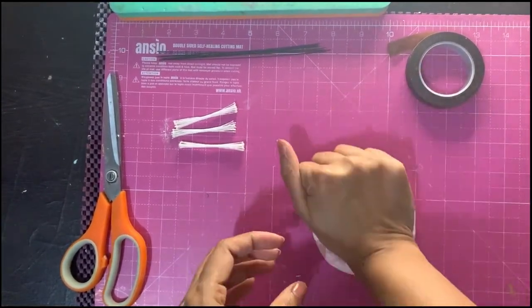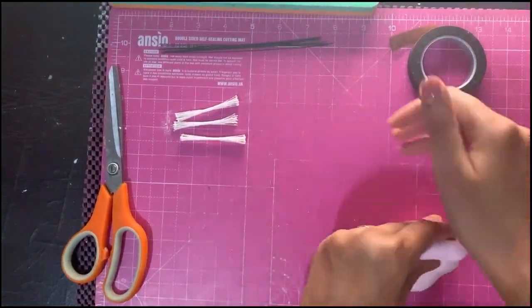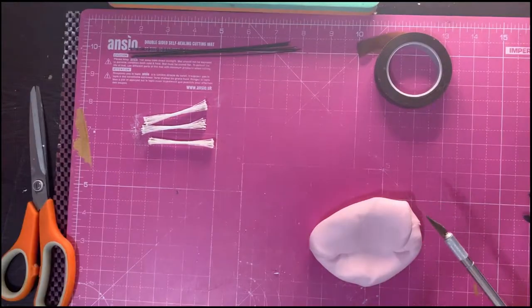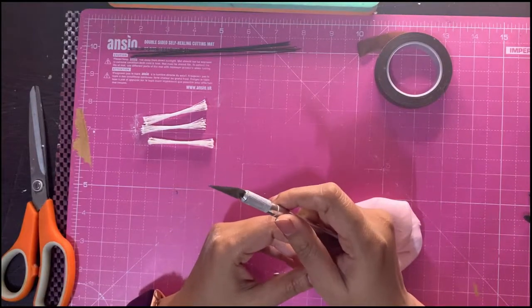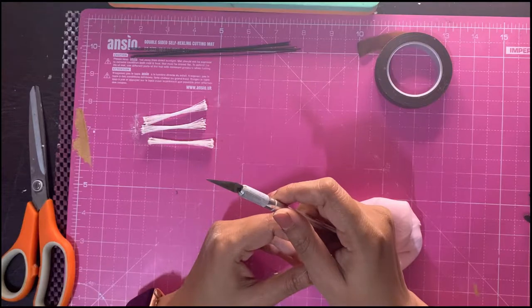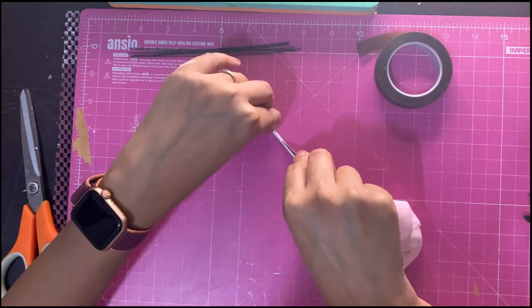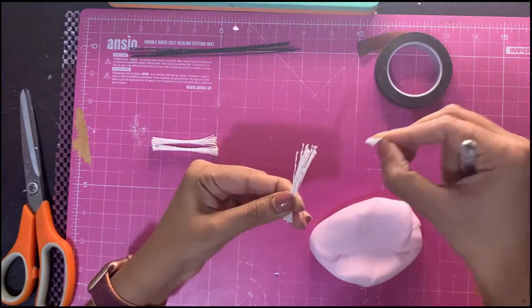Just knead it softly into the fondant. Using an exacto knife, I am going to open the pollen bunch into separate pollens. You can just remove the tape in the center and there you have it.